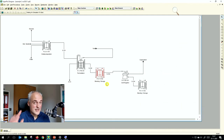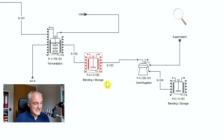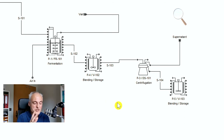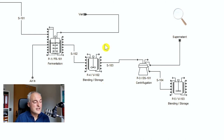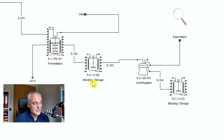To summarize: the centrifuge starts when the blending storage tank transfer out starts; the tank transfer in automatically precedes that; and the time of the transfer out is dictated by the centrifuge to achieve 97% separation efficiency. Scheduling and master-slave relationships are separate concepts.